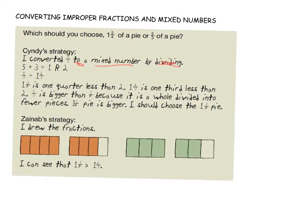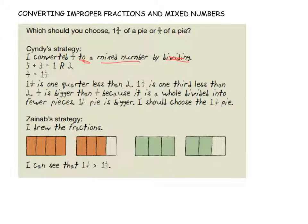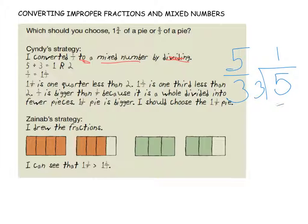Let's take a look here. When we have our improper fraction of five over three, that means we are dividing into groups of three. So we're going to divide five by three. How many groups of three would we have out of five? Well, we would have one. One times three is three, and I'm left with a remainder of two. So that means I would have one complete one, two left over, out of three — so it would become one and two-thirds.